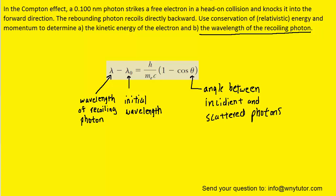And we can actually figure out the value of theta next. Because the question notes that the rebounding photon recoils directly backwards. And so we can imagine the photon initially moving in the rightward direction. And then after the collision with the electron, it turns around and moves in the opposite direction. And so the angle between the rightward direction and the leftward direction would actually be 180 degrees. So that's what we're going to fill in for theta.